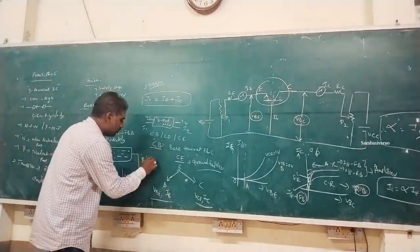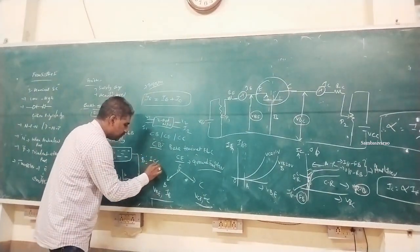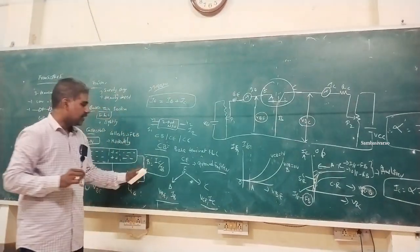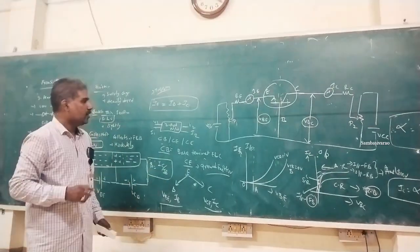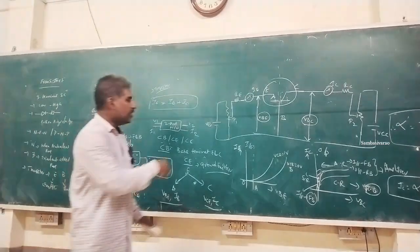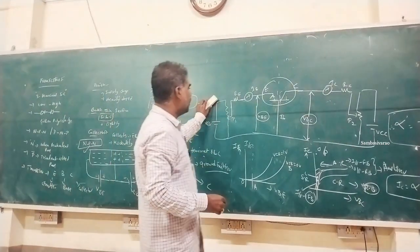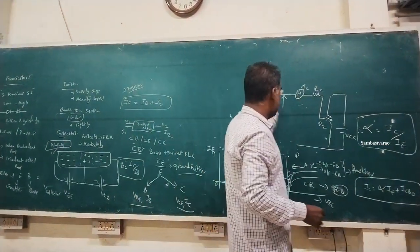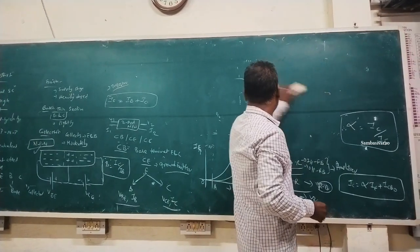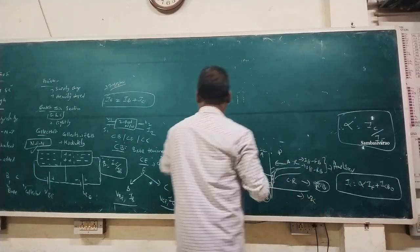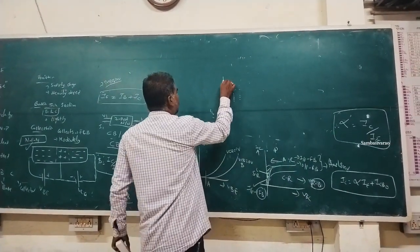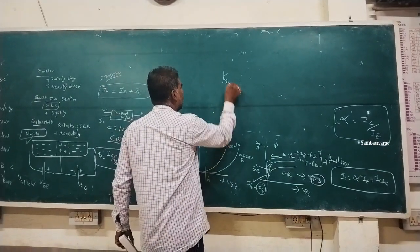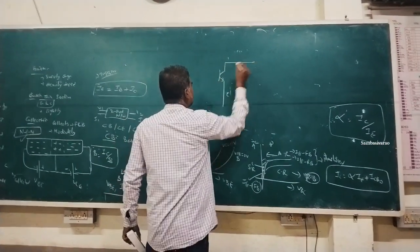Beta is the ratio of output current IC to input current IB — that is, beta equals IC divided by IB. The common emitter circuit is drawn with the emitter terminal grounded.